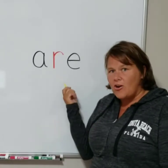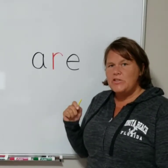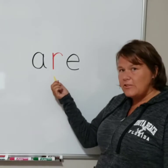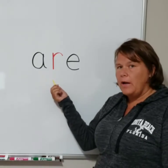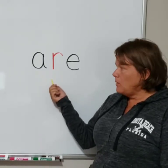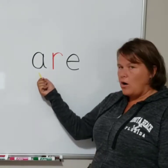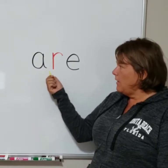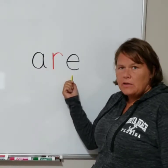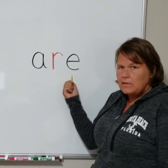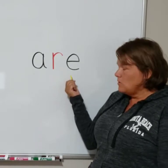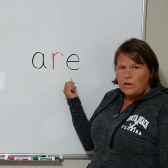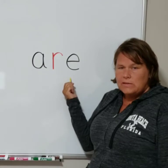This word is 'are.' What you need to remember about the word 'are' is that there is an R right in the middle. Before the R we have the letter A, and at the end we just have a random silent E that's not doing anything — just like silent E's always do. They just go at the end of the word and don't even say anything.